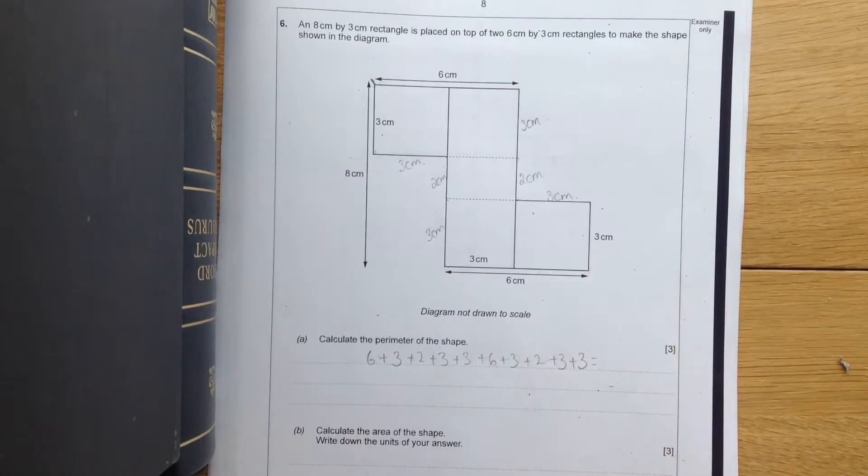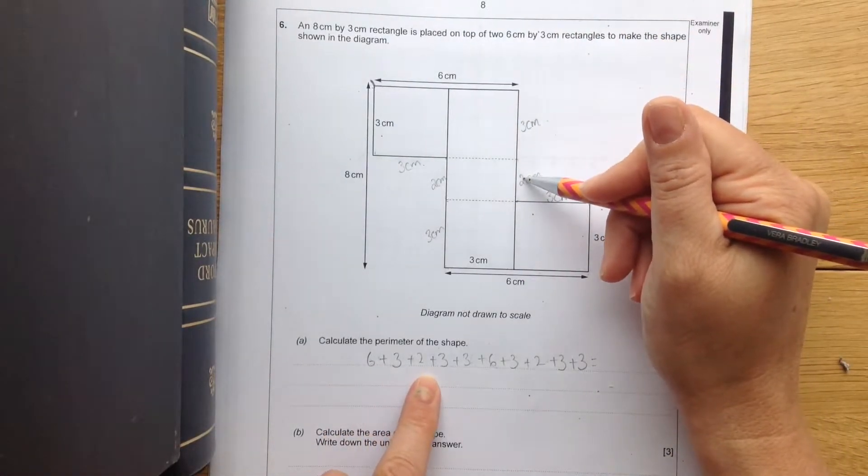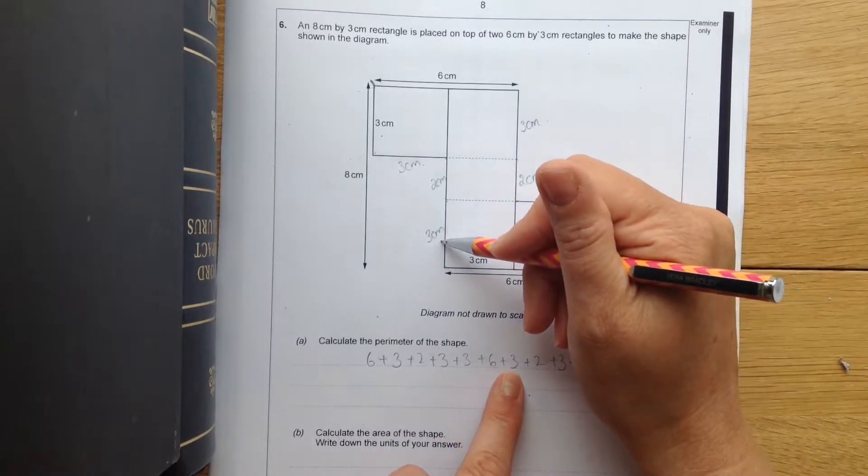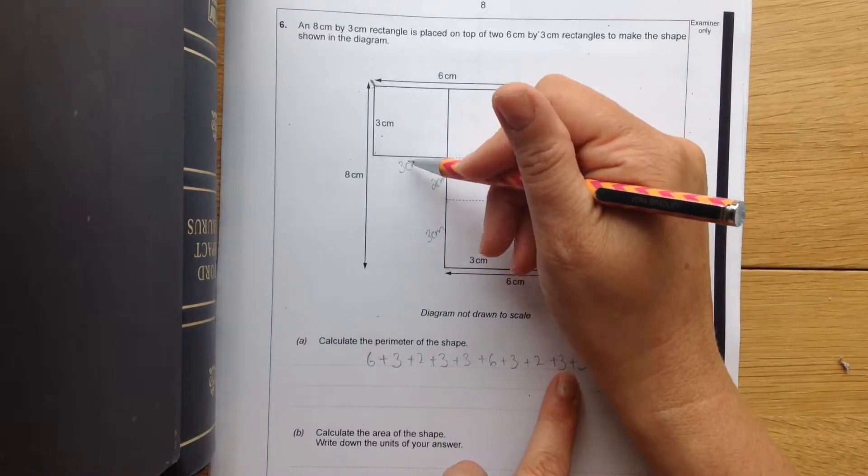And I'm going to check I've got that right. 6, 3, 2, 3, 3, 6, 3, 2, 3, 3.